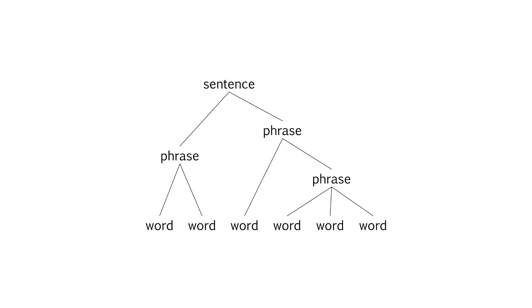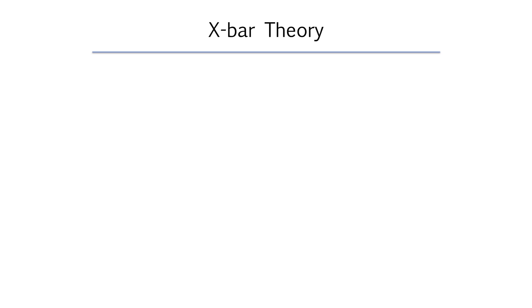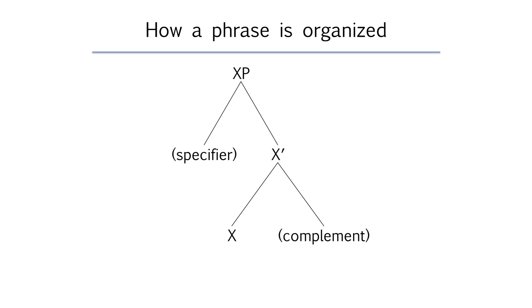The theory of syntax that we're working with in this class is called X-bar theory. X-bar theory makes the claim that every single phrase in every single sentence in the mental grammar of every single human language has the same core organization. Here's a tree diagram that shows us that basic organization. Let's look at it more closely.